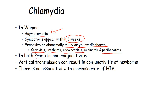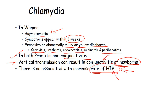In both sexes, proctitis and conjunctivitis can be seen with chlamydia infection. Vertical transmission can result in conjunctivitis in newborns — similar to gonorrhea infection, with discharge from the eye and difficulty visualizing things. Chlamydia is also associated with an increased rate of HIV, as patients with HIV have more chance of getting chlamydia.